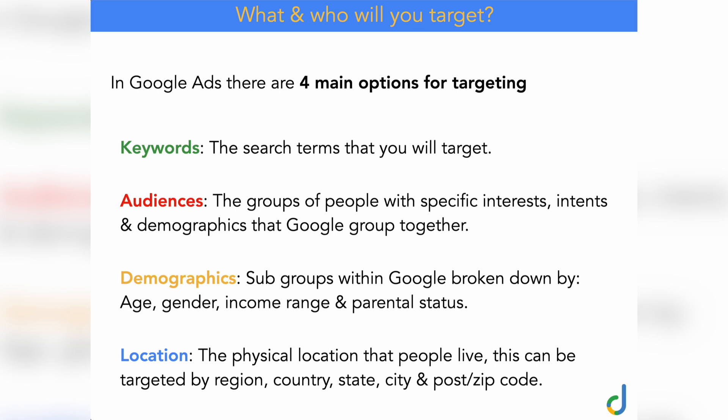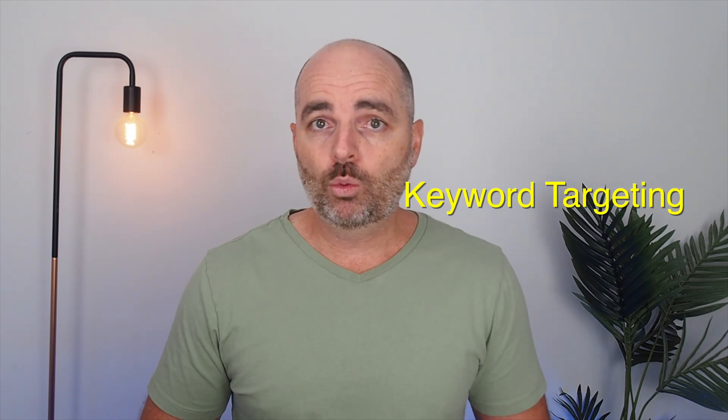Location can be targeted down by region, country, state, city, and even your post or zip code. Google Ads search campaigns is built on keyword targeting — you get to choose the specific keywords you want your ads to appear for. In order for someone to see your ad, they need to enter a Google search for your targeted keyword, or it needs to be a search query that matches your targeted keyword.